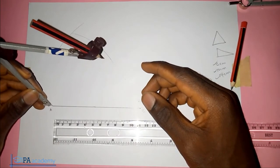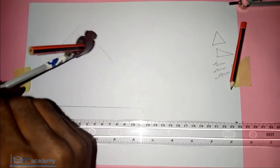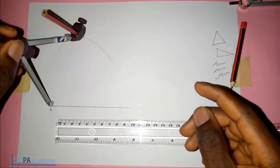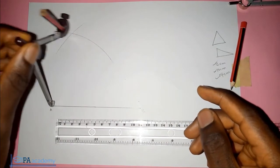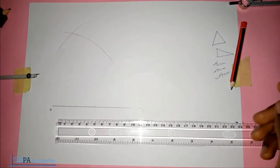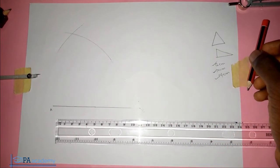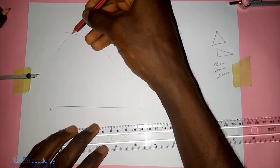So from point A, we can extend this arc so that they can intersect. So you can see, now the point of intersection of the two arcs, this is where they both intersect.